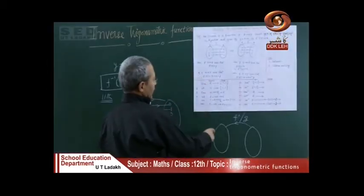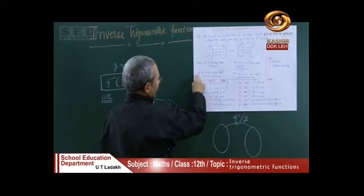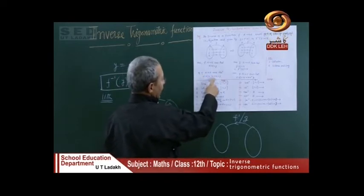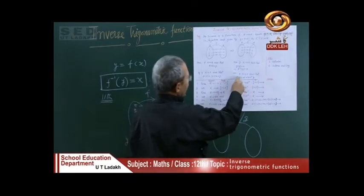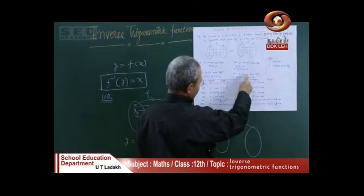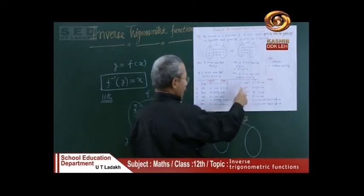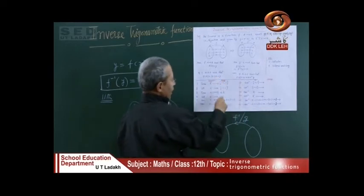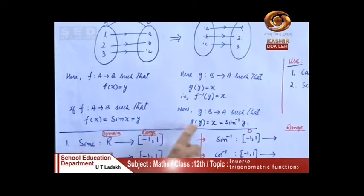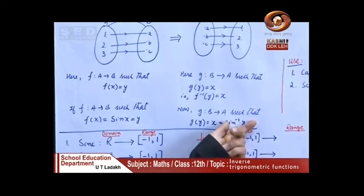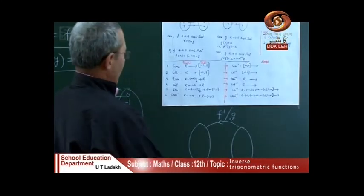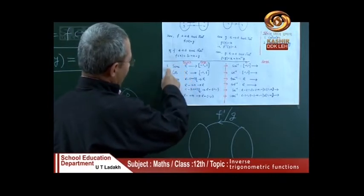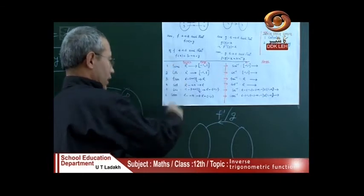Now we discuss sin. If f is a function from A to B such that f(x) = sin x — also denoted by y — then G is a function from B to A such that G(y) = x. For the inverse trigonometric function, sin x gives us sin⁻¹(y). So we discuss sin⁻¹(y). For the trig functions more generally, sin has domain ℝ and range [-1, 1], and cos also has domain ℝ and range [-1, 1]. We will first discuss the sin function fully, then cos, tan, cosec.